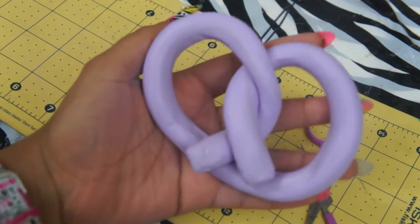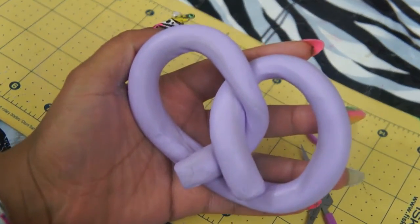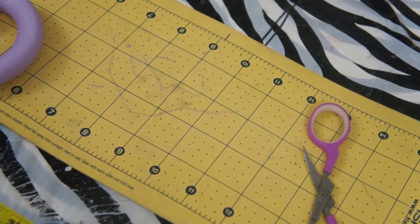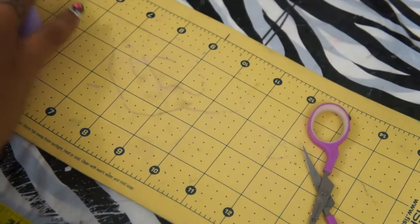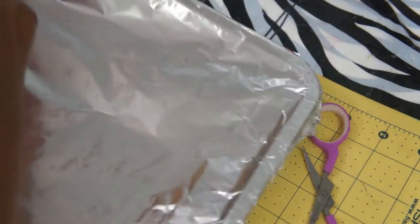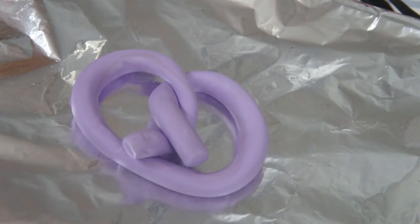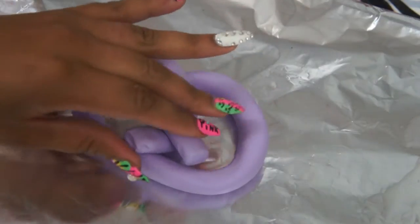As you can see, it looks just like a pretzel. And this is actually the color that she had. So now, you're going to take your baking pan lined with foil. And you're just going to place your pretzel on there. Okay, you're not going to apply butter or anything like that. It won't stick to it anyway.